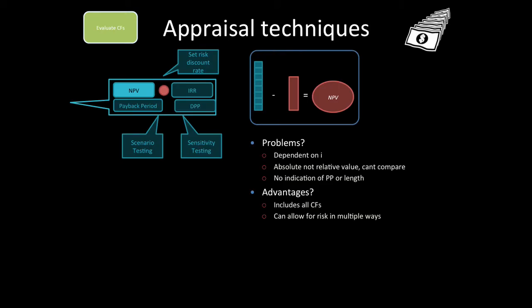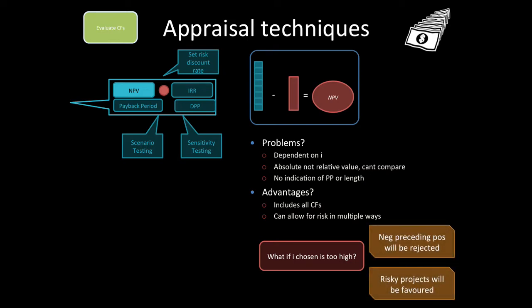Now with the appraisal techniques, you've got the net present value. The problem is that it depends very much on the internal rate of return. It's an absolute figure and it's not relative, so it's difficult to compare with. It gives no indication of the payback period or the length of the project. The advantages are that it does include all cash flows and can allow for risk in multiple ways. If the discount rate is chosen too high, then the negatives preceding the positives will be rejected and risky projects will be favored.